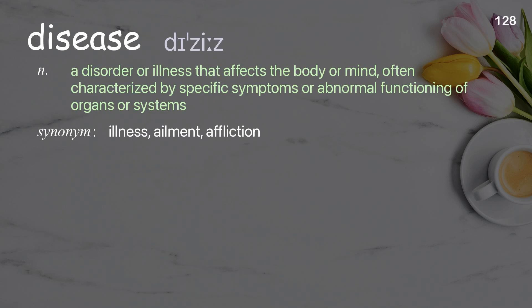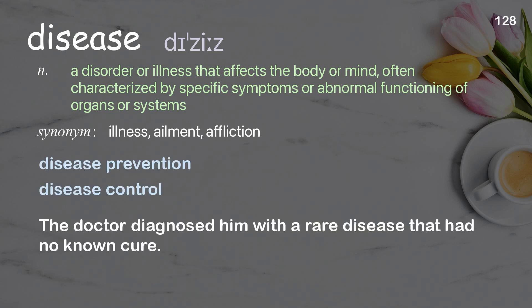Disease: a disorder or illness that affects the body or mind, often characterized by specific symptoms or abnormal functioning of organs or systems. Examples: disease prevention, disease control. The doctor diagnosed him with a rare disease that had no known cure.